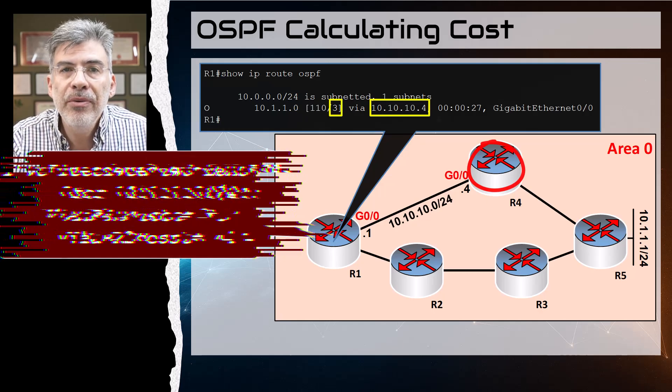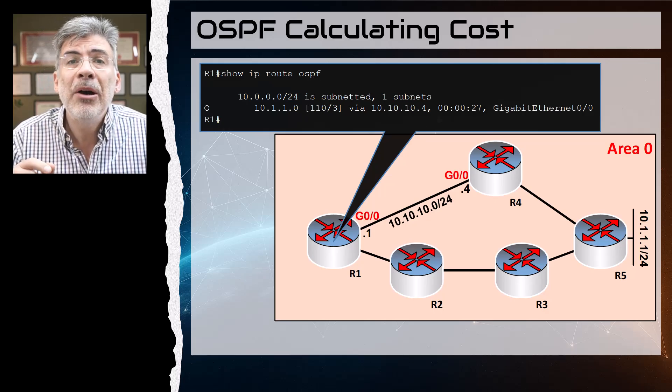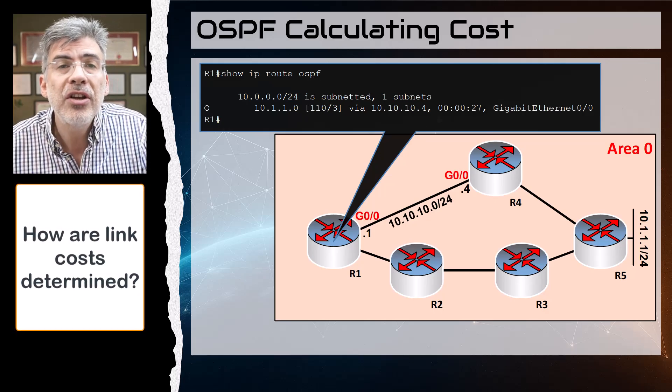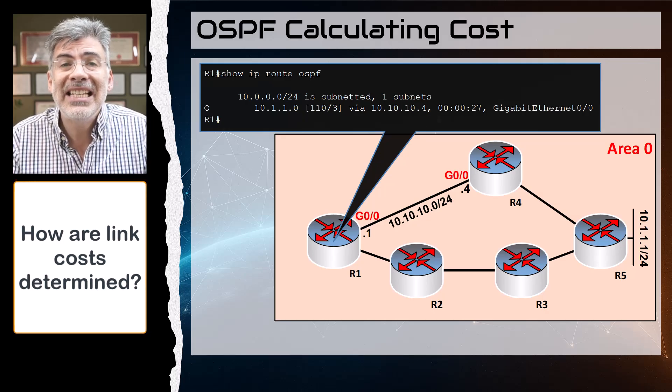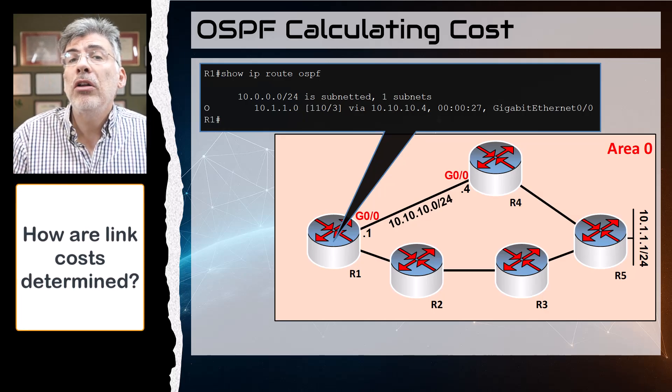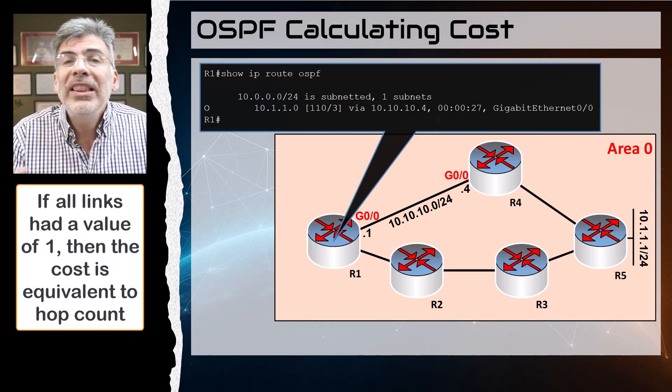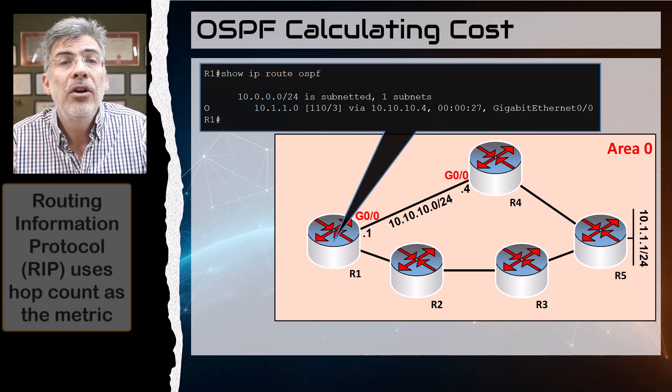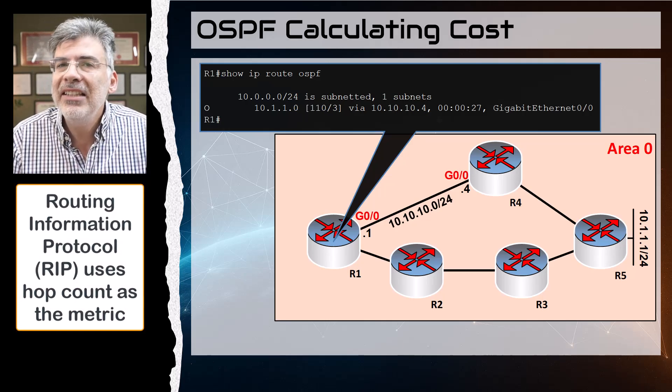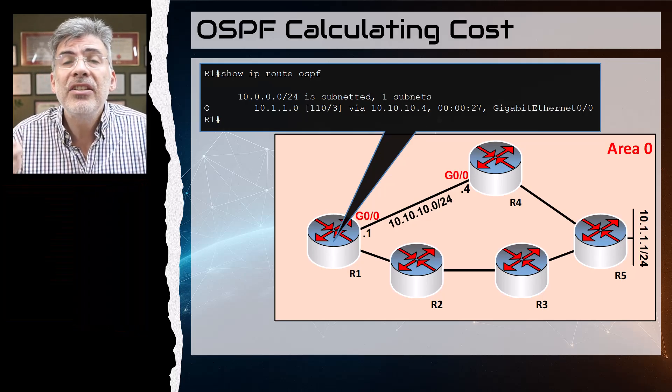Now one last thing I'd like to mention here is about how those costs are actually calculated. How do we know that the cost of these links is indeed one? And do all links have a value of one? If all links had a value of one, then what this is is essentially a hop count, so it's acting like RIP, but OSPF isn't like that.